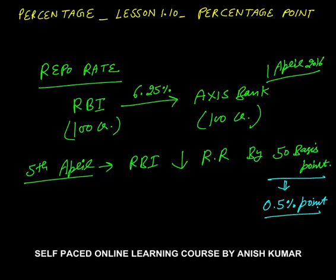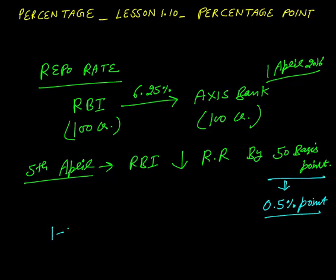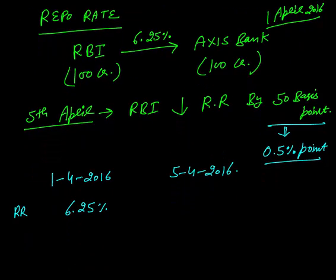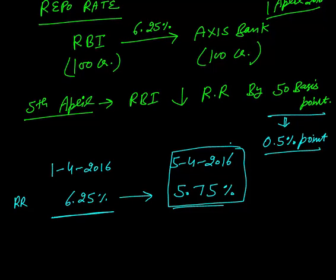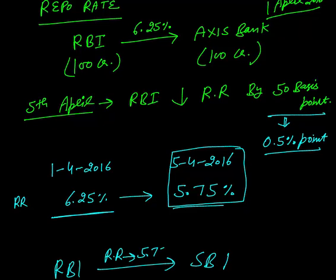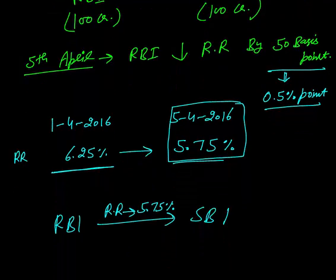It means that earlier on 1st April 2016 the repo rate was 6.25%. RBI reduces the repo rate by 0.5 percentage point, so there is a difference — this will reduce by 0.5. So it will be 5.75%. Earlier the repo rate was 6.25% minus 0.5%, you are left with 5.75%. From 5th April the repo rate will be 5.75%. That is the practical aspect of the percentage point.